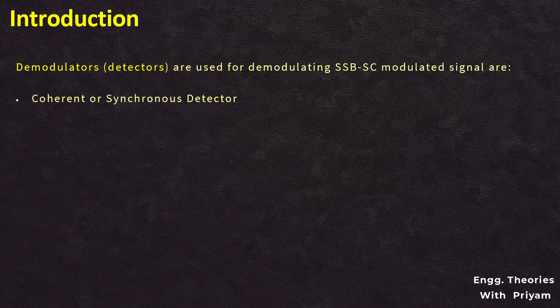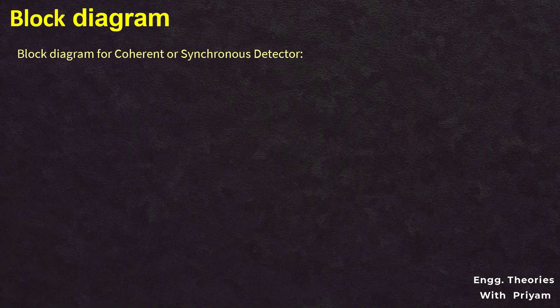Coherent detection is one of the simplest detection techniques, where demodulation of the SSBSC modulated signal is done with the help of a product modulator and a low-pass filter. The carrier signal used here is the same carrier signal used in the generation of the SSBSC modulated signal. Let's look at the block diagram for coherent detection of the SSBSC modulated signal.